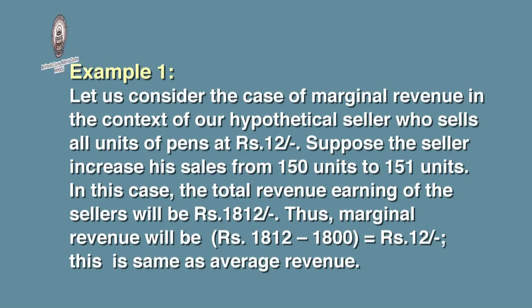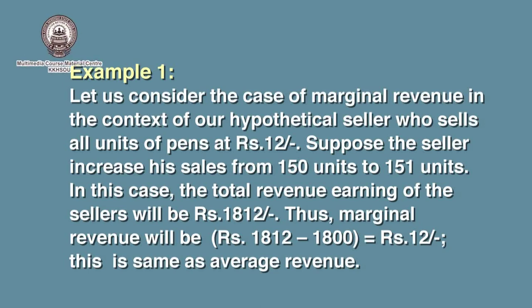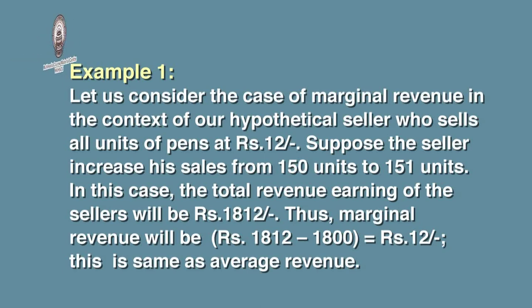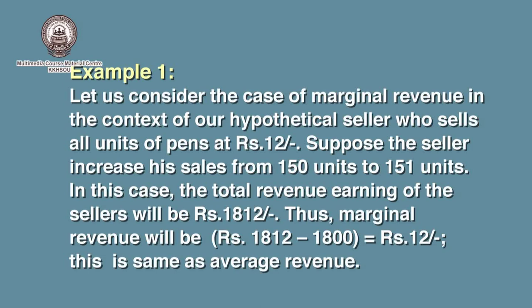Let us consider the case of marginal revenue using our hypothetical seller who sells all units of pens at rupees 12. Suppose the seller increases his sales from 150 units to 151 units. In this case, the total revenue earned by the seller will be rupees 1812. Thus, marginal revenue will be rupees 1812 minus rupees 1800, that is rupees 12. This is the same as average revenue.